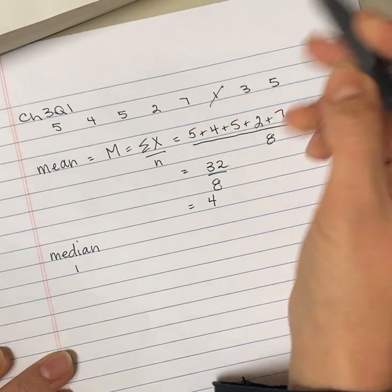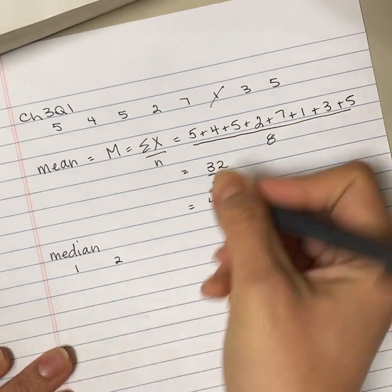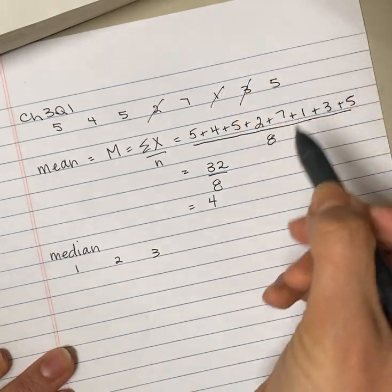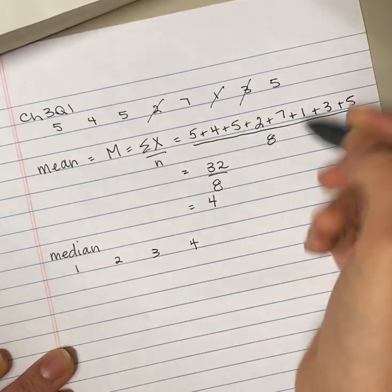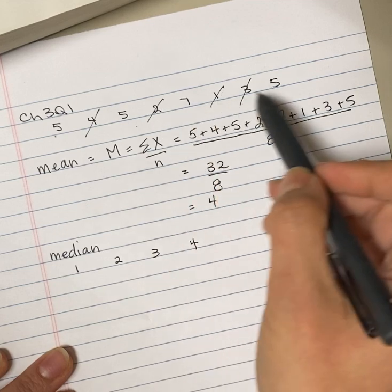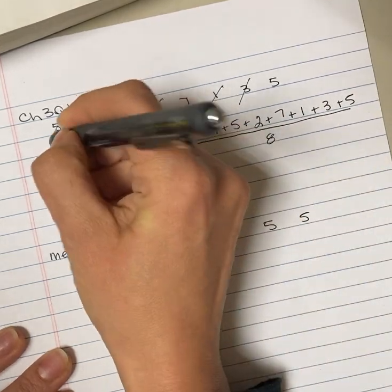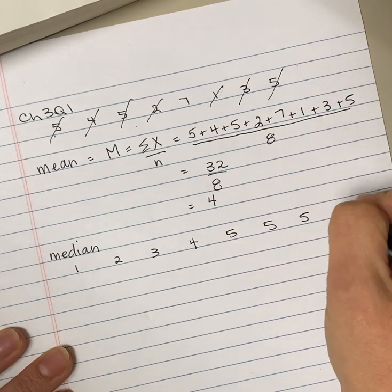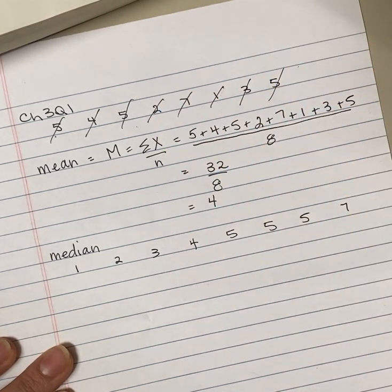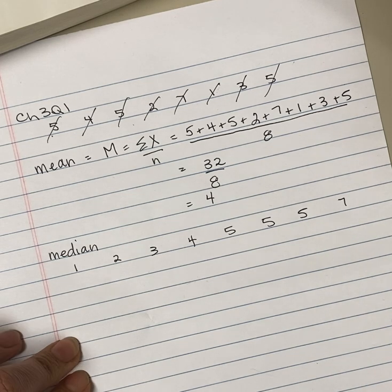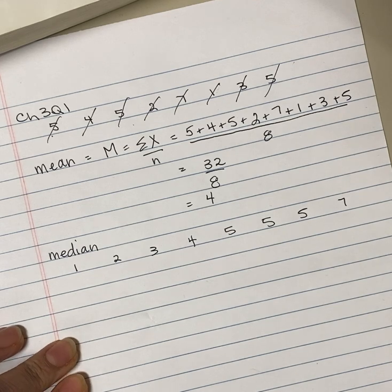So 1, and I like to cross these out as I go, and 2, then I have a 3, then there's a 4, then there's 1, 2, 3 fives, and a 7. I like to cross them out because that is a signal to my brain that I've already accounted for that value and that I haven't missed it or forgotten it.